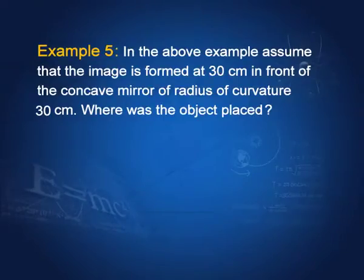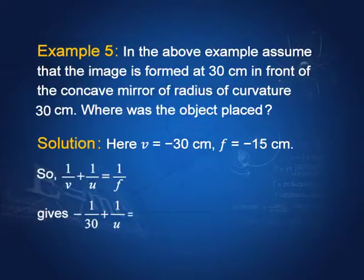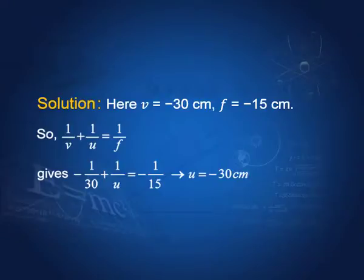Take another example: assume the image is formed at 30 cm in front of a concave mirror of radius of curvature 30 cm. We have v = -30 cm and f = -15 cm. Applying the mirror formula — which is a kind of mantra you must always remember: 1/v + 1/u = 1/f — we get: -1/30 + 1/u = -1/15, giving u = -30 cm. So both v and u are -30 cm, meaning the image is formed at the same point as the object, which is at 2f.